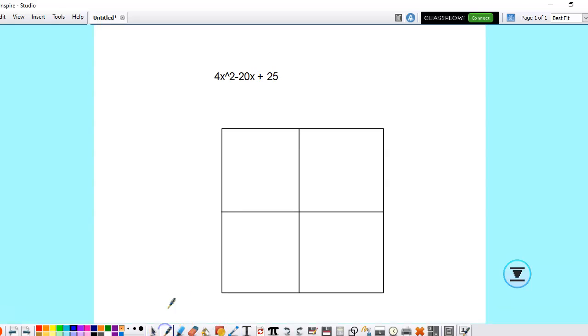Hey, Eric. Sorry to take so long to get back to you. So if you were going to factor this one, I believe it's 4x squared minus 20x plus 25.